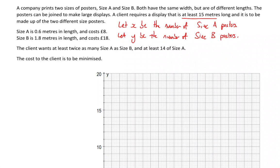Now that I've done that, I can start setting up my problem. Because the cost to the client is to be minimized, I need to write down that I am minimizing. I'm going to use capital C to represent the cost. That's going to be eight pounds times every single size A poster, so 8x, and 18 pounds times the number of size B posters, so 18y. I'm minimizing 8x plus 18y.